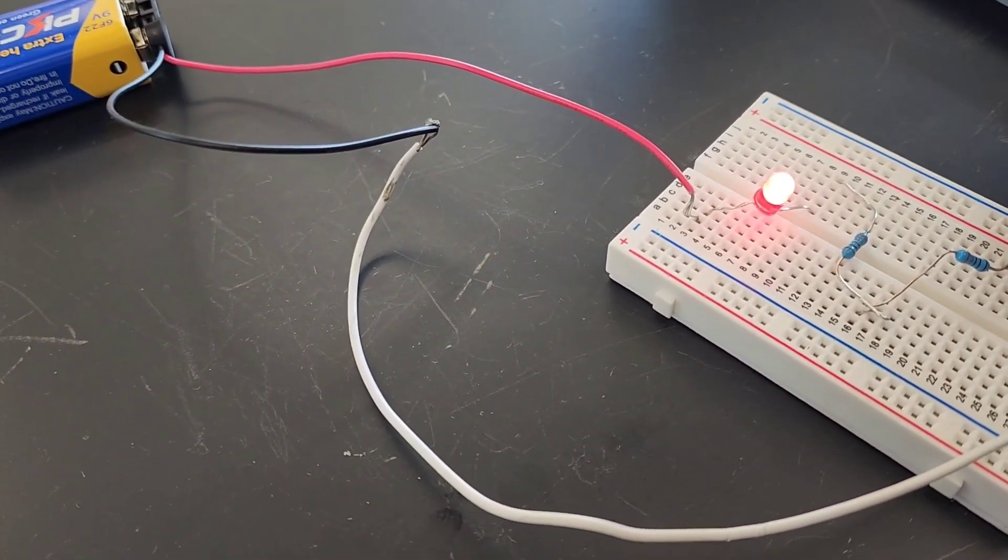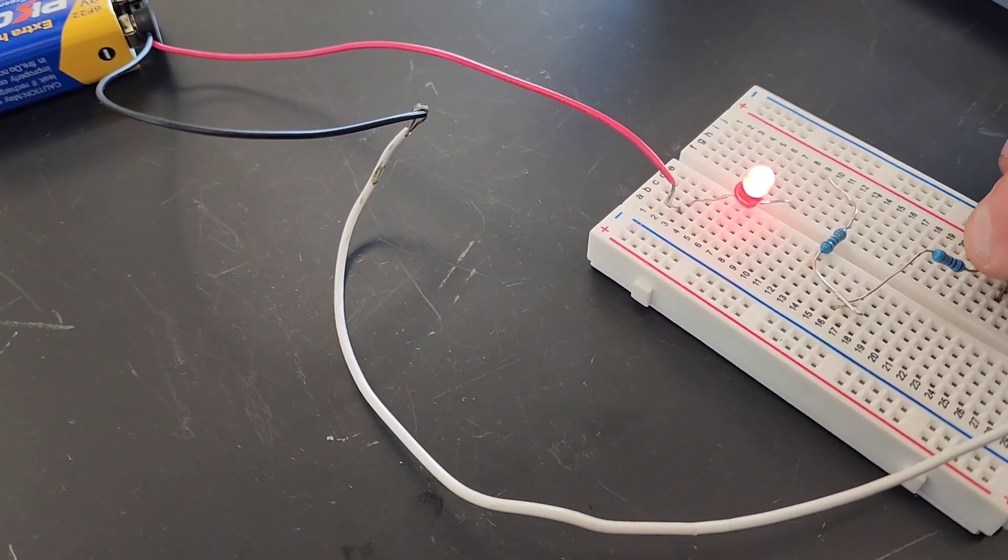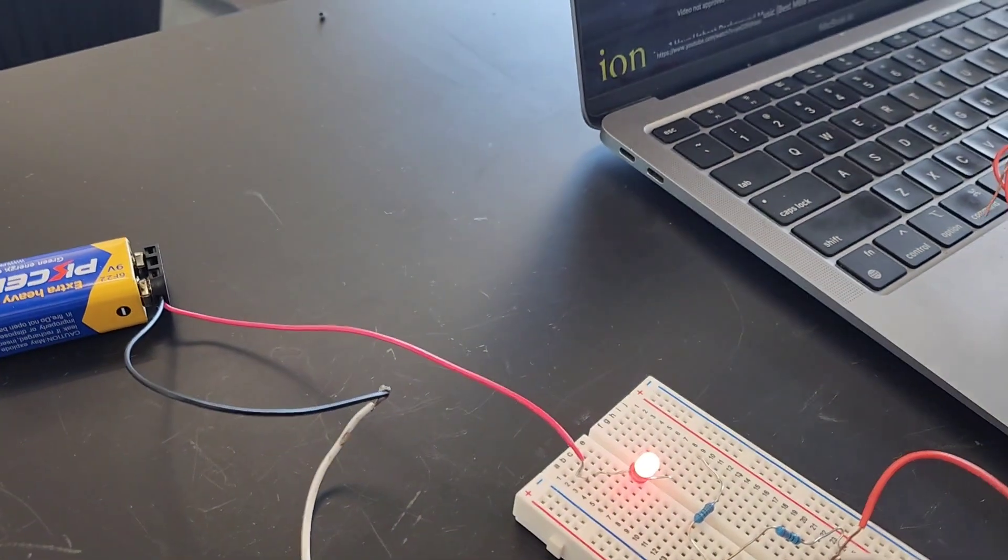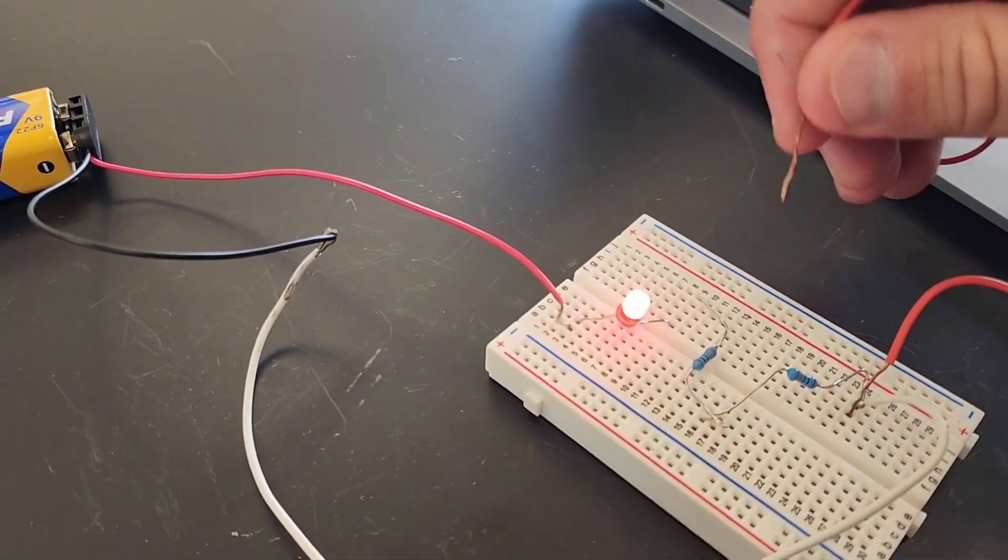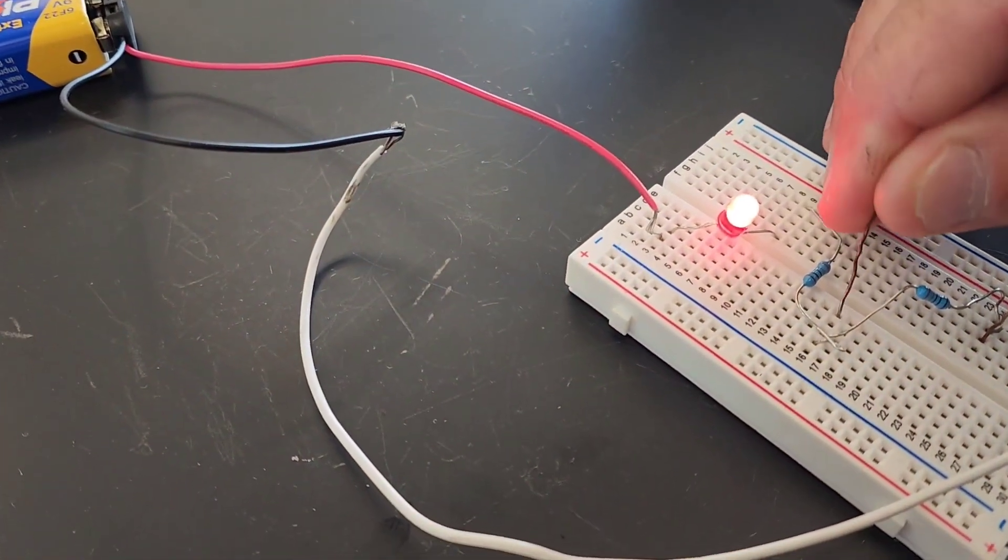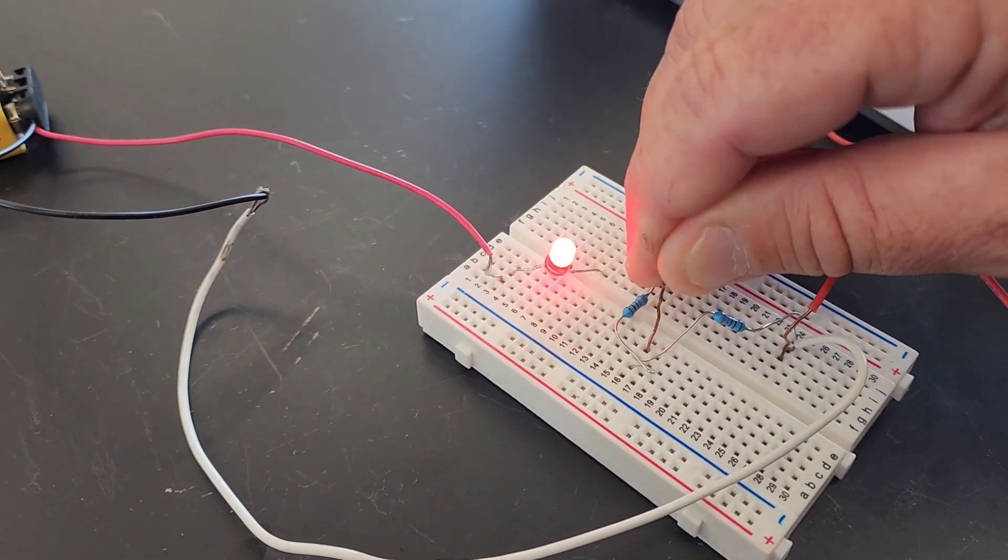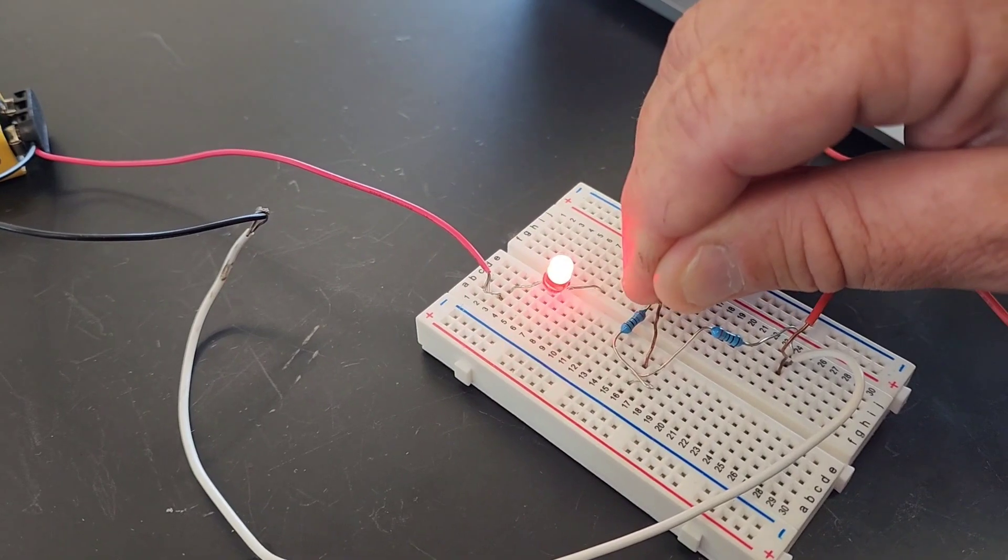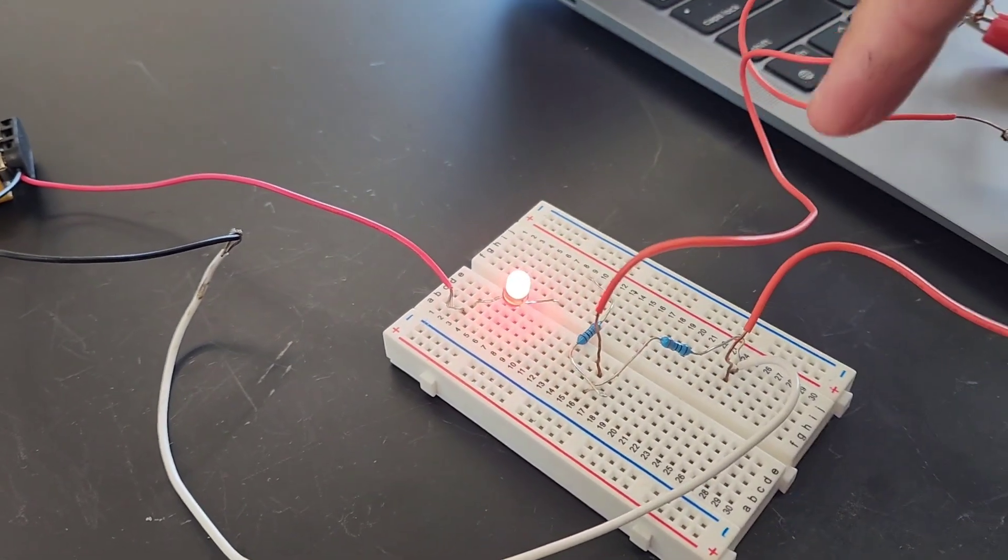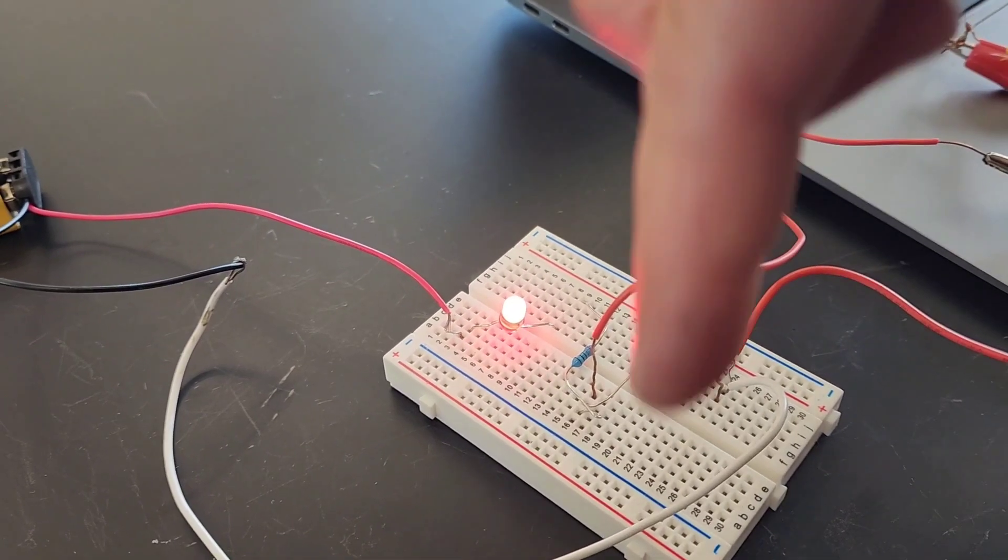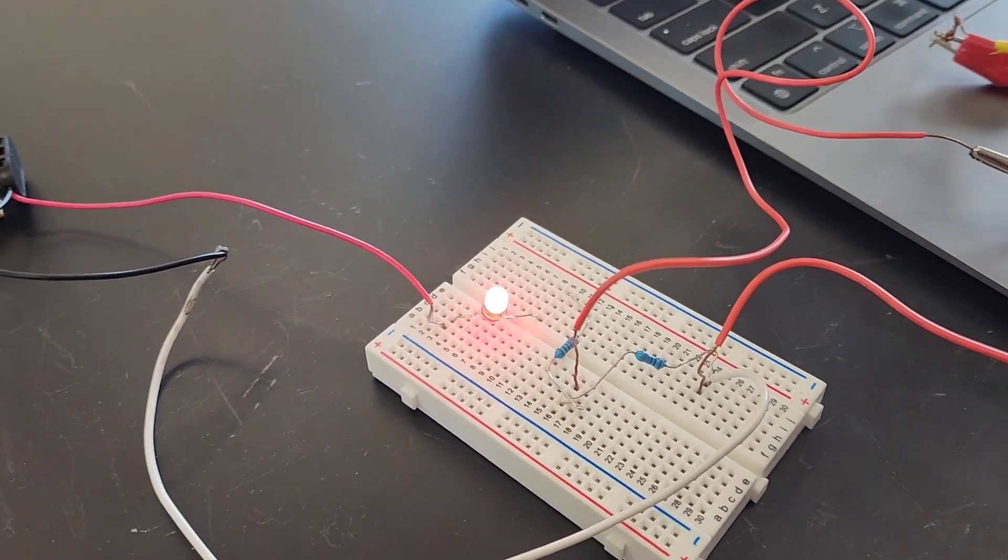I'm actually going to set it up so that the headphone jack leads are in parallel with this resistor. In fact, you see the LED gets a little bit brighter when I connect it because by putting the pathway with the headphone jack in parallel with this resistance, it actually lowers the resistance of the circuit.